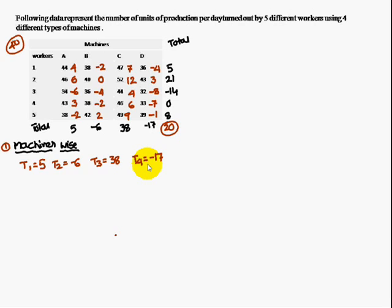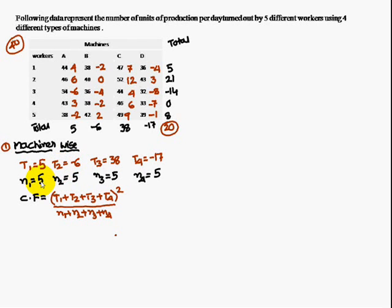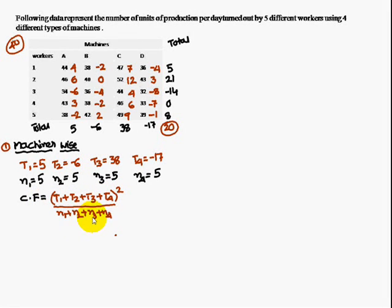Follow the steps in the order given. Here n1 = 5 (number of items in machine A), n2 = 5 (machine B), n3 = 5 (machine C), n4 = 5 (machine D). The correction factor is (T1 + T2 + T3 + T4) squared divided by (n1 + n2 + n3 + n4), which gives 20.